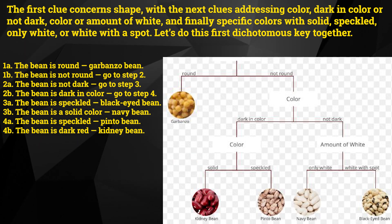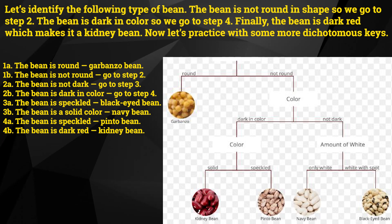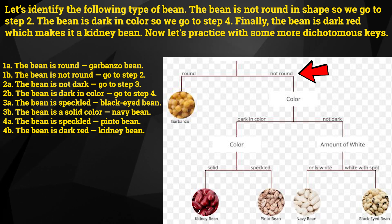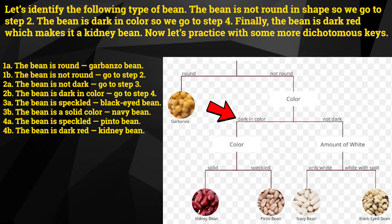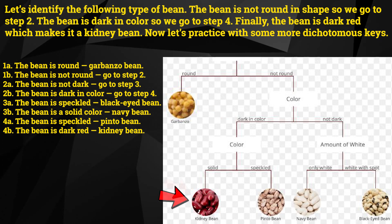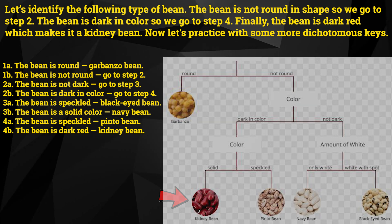Let's do this first dichotomous key together. Let's identify the following type of bean. The bean is not round in shape, so we go to step two. The bean is dark in color, so we go to step four. Finally, the bean is dark red, which makes it a kidney bean. Now let's practice with some more dichotomous keys.